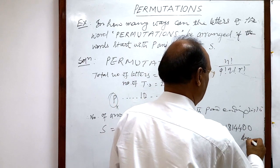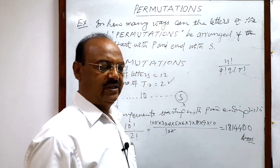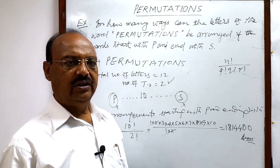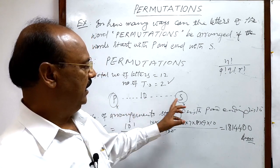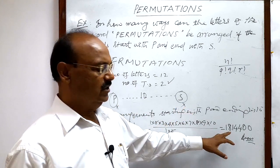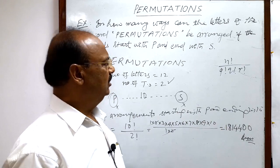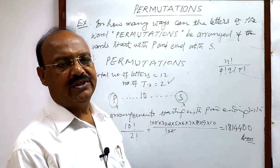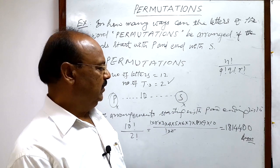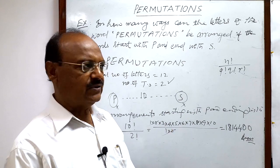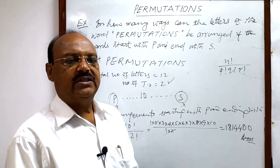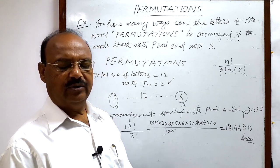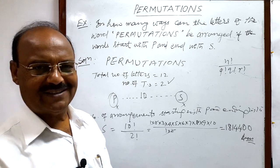So this is the answer — the total number of arrangements, meaning total number of words with or without meaning, starting with P and ending with S is 1,814,400. Hope you have understood it very well. The question is simple, a little tricky, but we can do these questions very easily. Please stay in touch with other videos, as we are going to discuss many important questions. Thank you very much for watching, all the best.